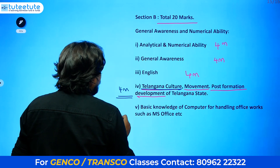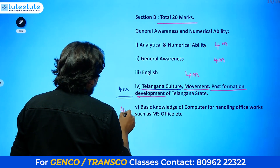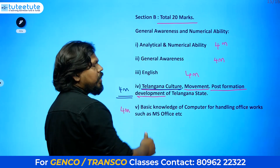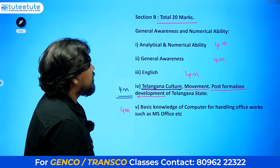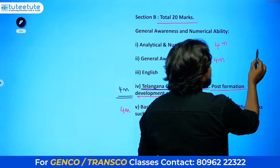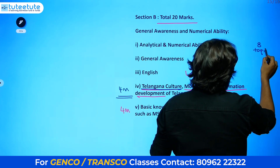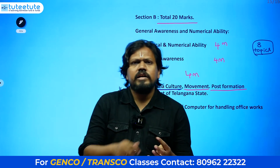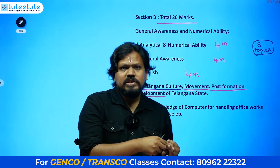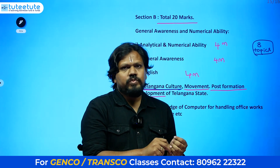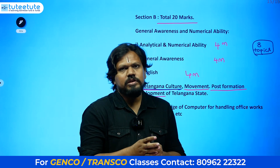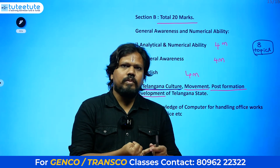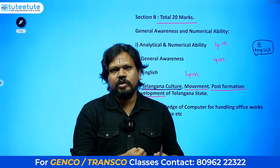The next topic is Basic Knowledge of Computers, which also carries 4 marks. For Analytical and Numerical Ability, they concentrate on 8 major topics: averages, number series, time and distance, time and work, sitting arrangements, profit and loss, and sometimes pipes and cisterns, and boats and streams.